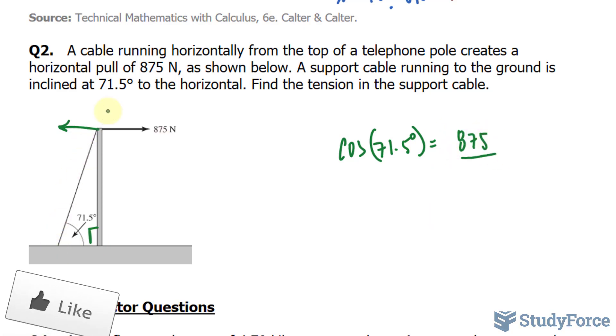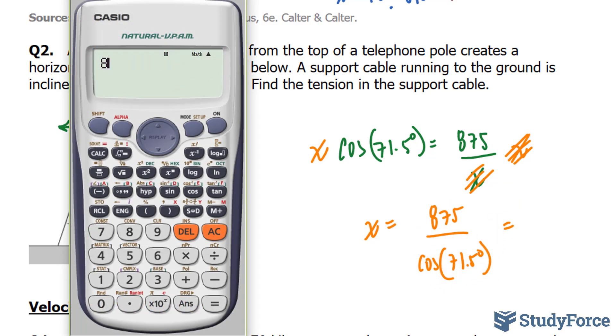And we're looking for the hypotenuse which we'll call x. To find x, you multiply both sides by what's underneath which is x. That will cancel out the x at the bottom and position it on the other side of the equation. And then we divide both sides by cosine 71.5 where we get x is equal to 875 divided by cosine of 71.5 degrees. Using our calculator,